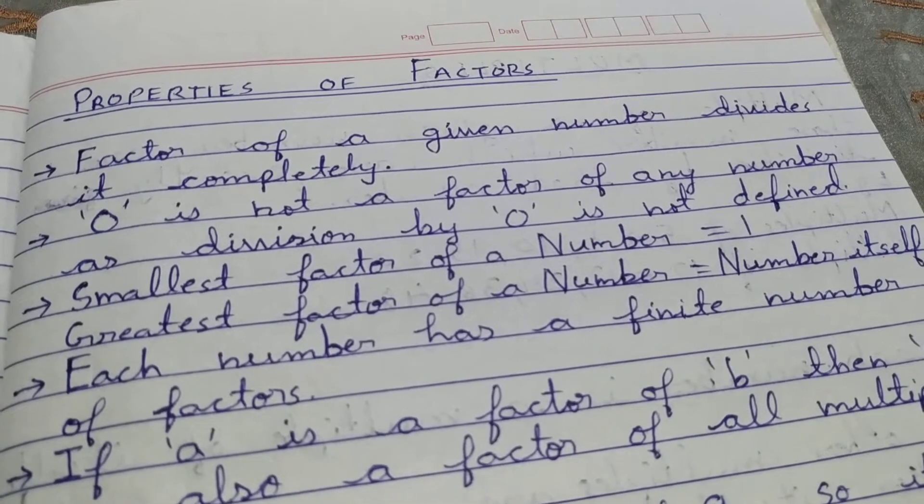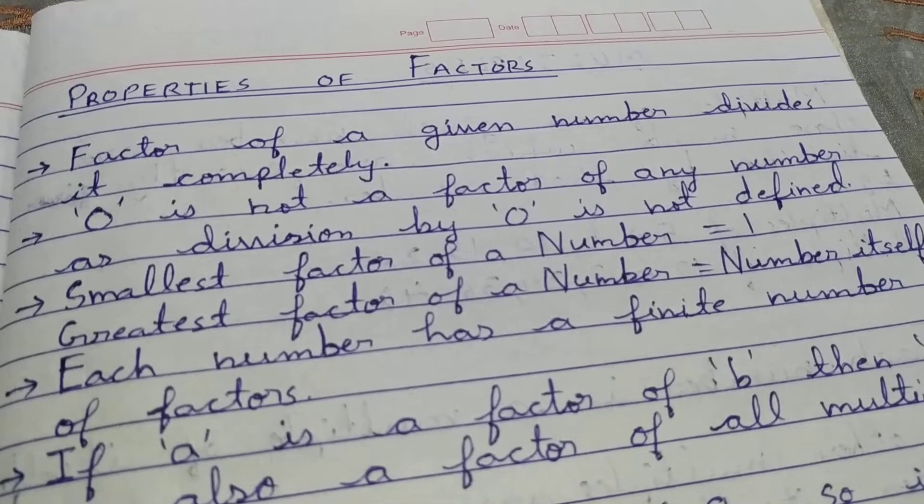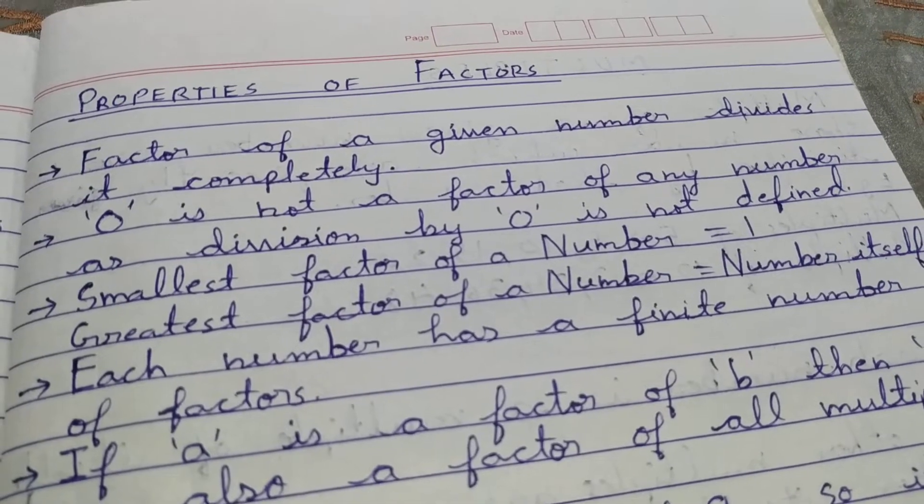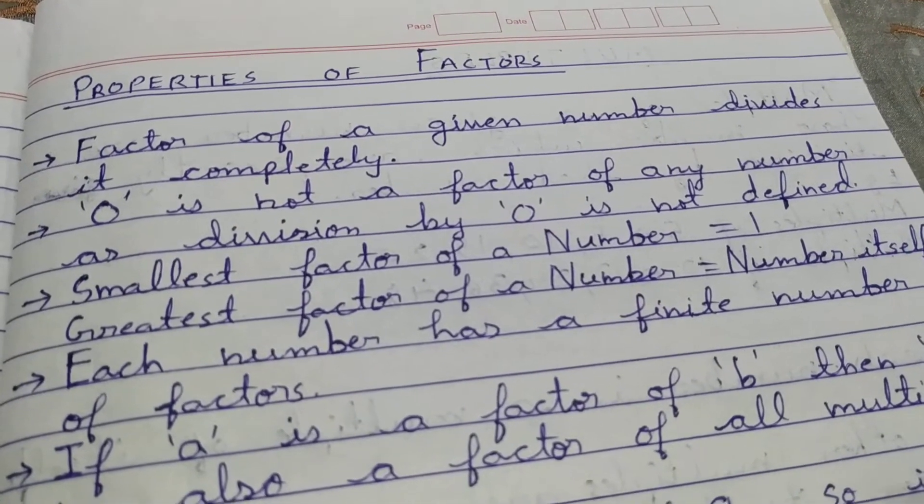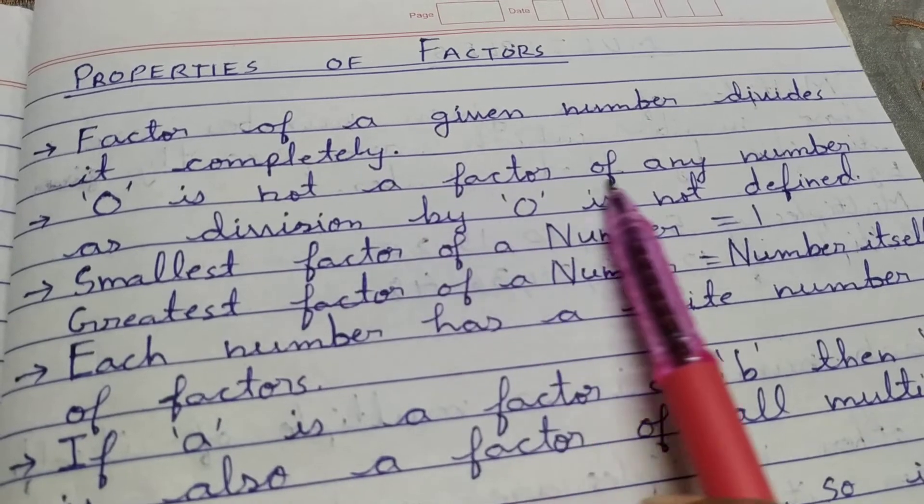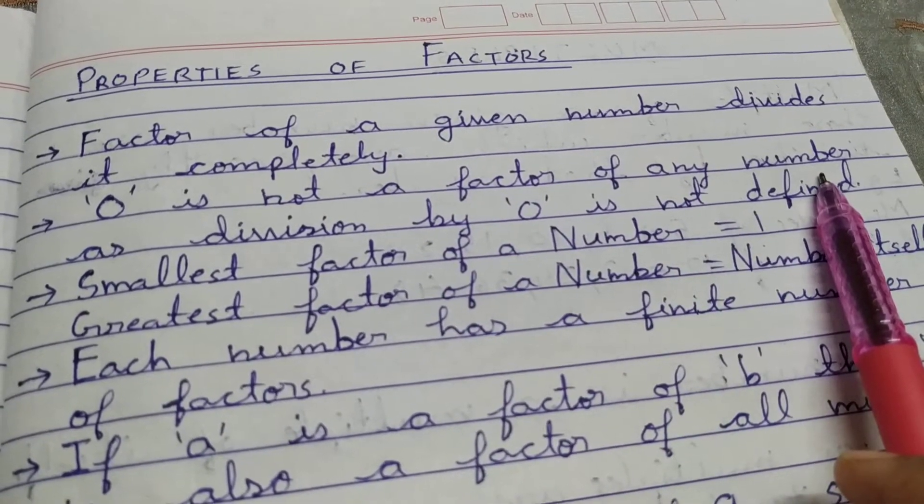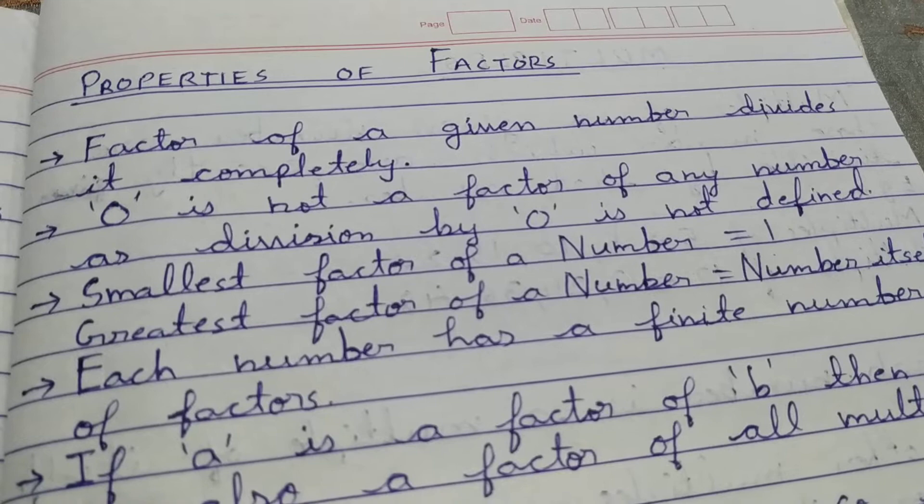Properties of Factors. A factor of a given number divides it completely. Zero is not a factor of any number, as in mathematics, division by zero is not defined.